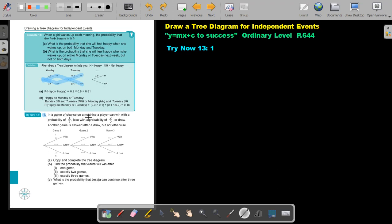In a game of chance on a machine, a player can win with a probability of one third, lose with a probability of two over five, or draw. Another game is allowed after a draw. Very important, but not otherwise. It's not necessary that they give you this tree diagram. If they don't give it to you, you must construct it yourself. Let's just see what's happening there.